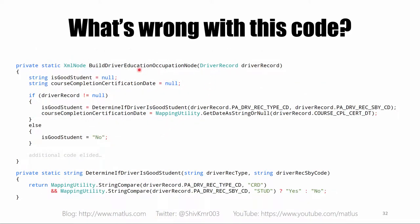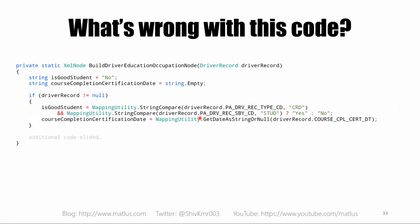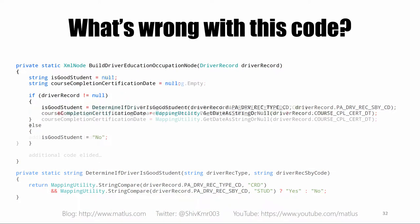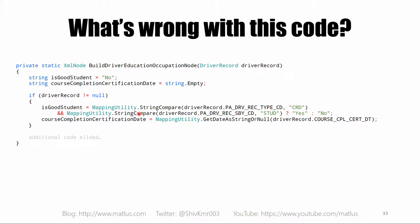Here's another method with two implementations — same name, same method, just refactored. Here's one implementation with a bunch of highlighted code. In this original version a string has been initialized to the value 'no' and another string has been initialized to string.Empty, and then conditionally these two values are being set to something else.